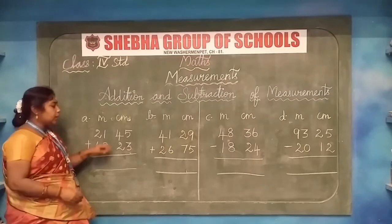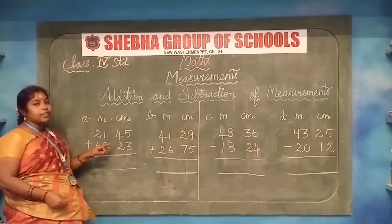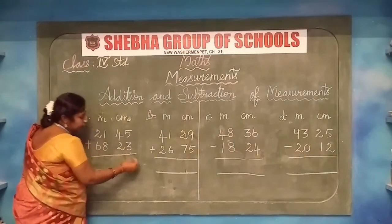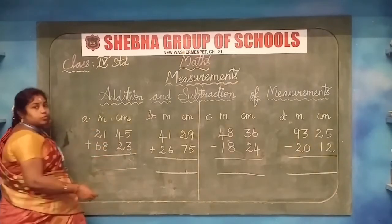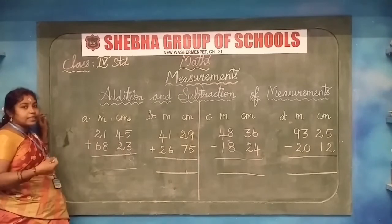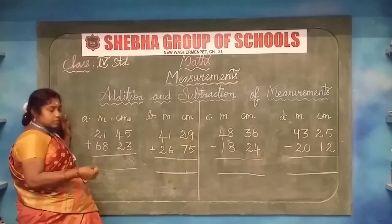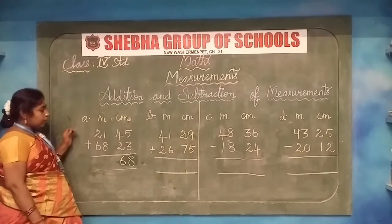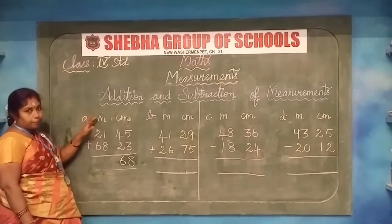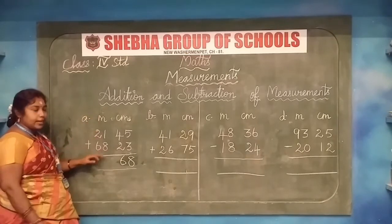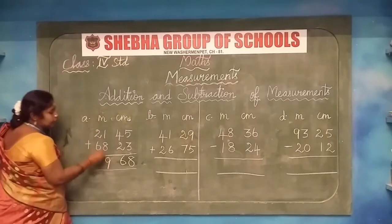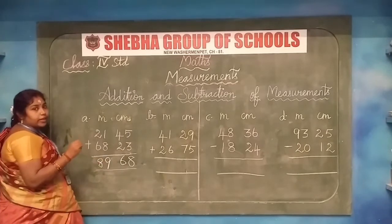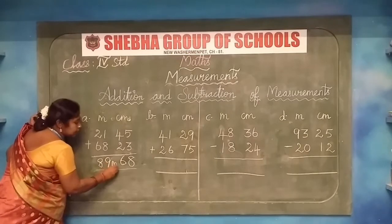Let us do the addition. Come on, do along with me. 5 plus 3: 5 in the mind, 3 on the finger — the answer is 8. 4 plus 2 gives 6. Then moving to meter: 1 plus 8 is 9, and 2 plus 6 is 8. After adding these facts we have to write the units — it is very compulsory to mention which one is meter and which one is centimeter.